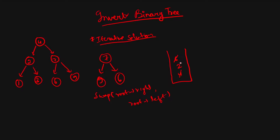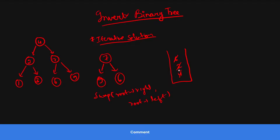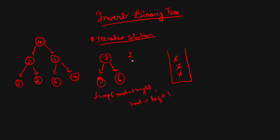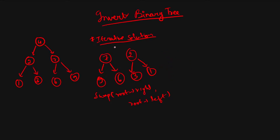Next we pop node two, which has children one and three. We push one and three onto the stack, then swap them so left becomes three and right becomes one. We then pop three and do the same, then pop one and do the same. Once every node is processed the stack is empty, and we return our binary tree — which now looks like the inverted binary tree.